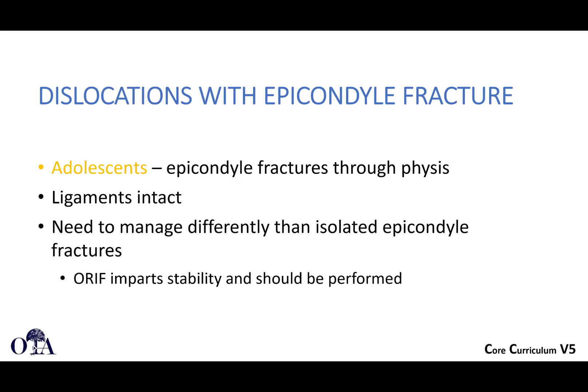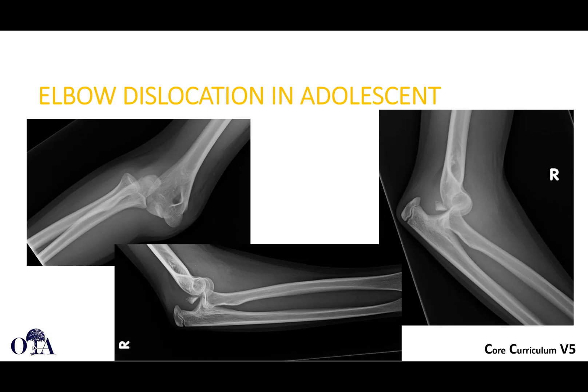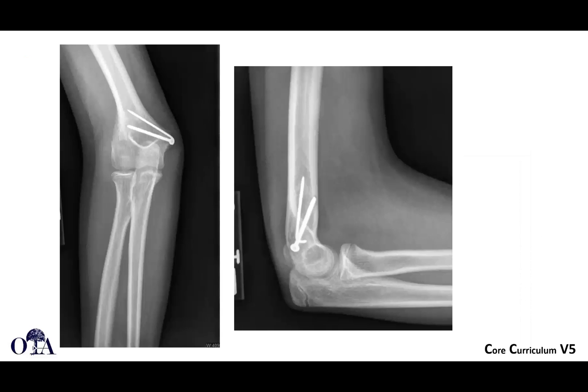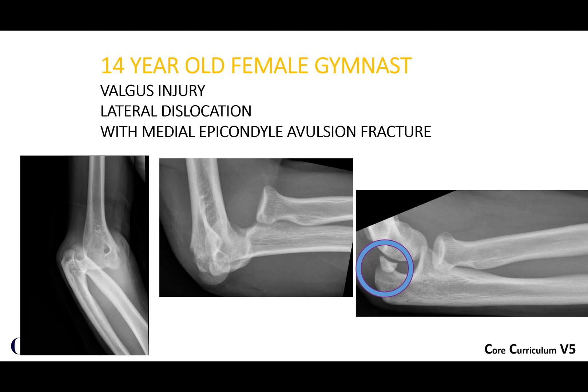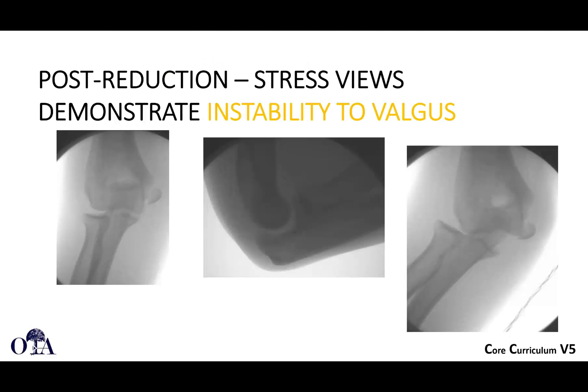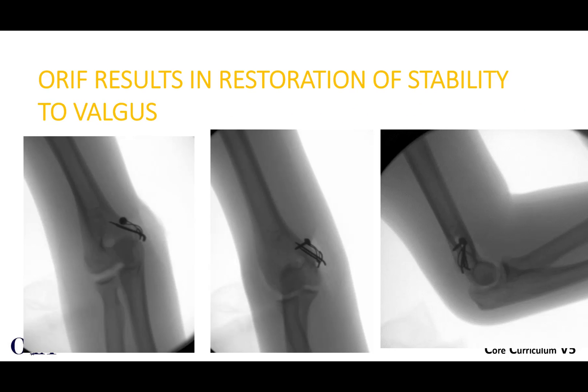Epicondyle fractures can occur in adolescents where there is a fracture through the physis. The ligaments can be intact, and you need to manage it differently from an isolated epicondyle fracture because fixing that fragment imparts stability and helps keep the elbow stable. Here's an elbow dislocation in an adolescent post-reduction with a medial epicondyle fracture treated with open reduction internal fixation. As another example, a 14-year-old female gymnast with a valgus injury and dislocation with a medial epicondyle avulsion fracture, closed reduced. Stress views demonstrate tremendous instability, so this is treated with ORIF using a tension band construct, which restores stability to valgus stress.